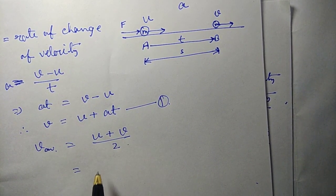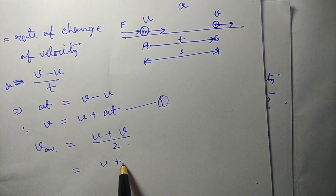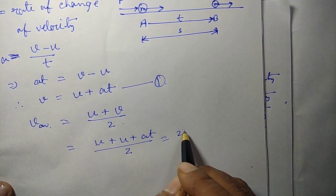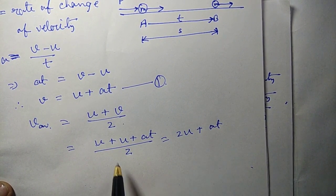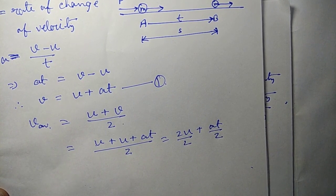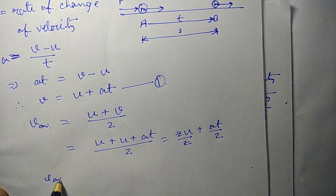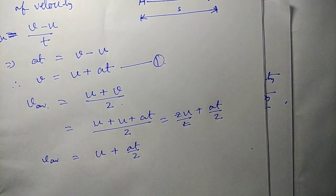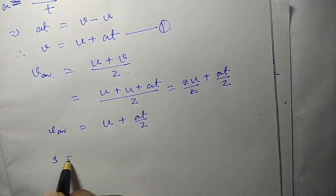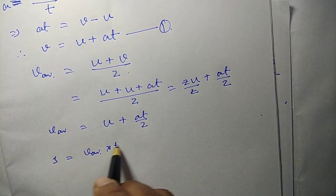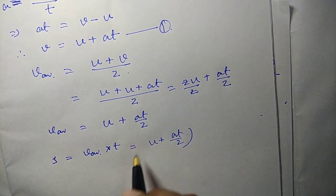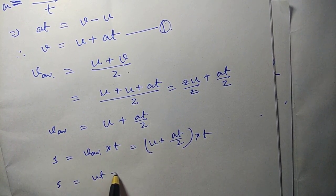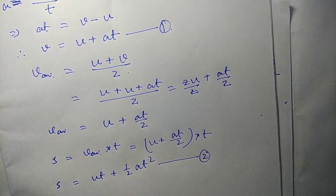Let's put the value of v from equation 1, that means v equals u plus at. So it becomes (u plus u plus at) divided by 2, which gives (2u plus at) divided by 2. Separating the two quantities, the 2s cancel, giving average velocity equals u plus at divided by 2. So we have got the average velocity.